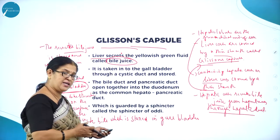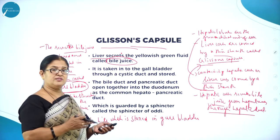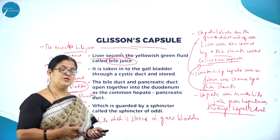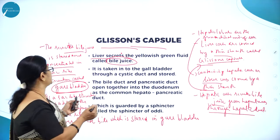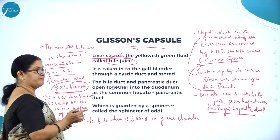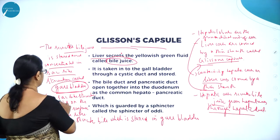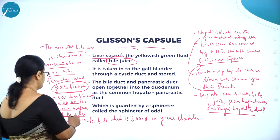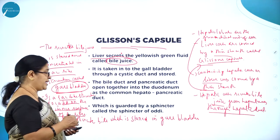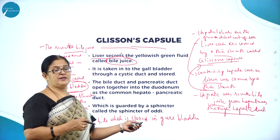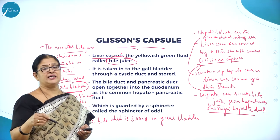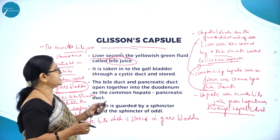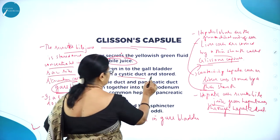The final process of digestion takes place in the small intestine. The secretions of the liver — bile juice — and the secretions of the pancreas — pancreatic juice — all pour into a sac-like structure called the gallbladder. The gallbladder is located on the inner surface of the liver. Bile juice is stored in the gallbladder and through the bile duct goes into the small intestine, taken into the gallbladder through a cystic duct.